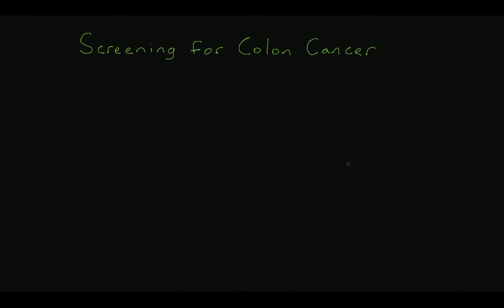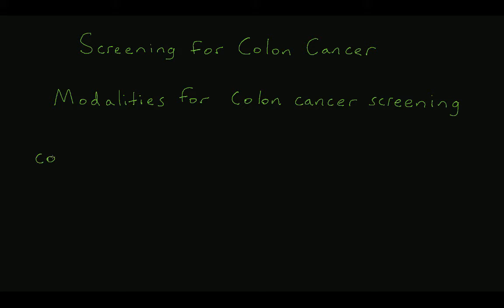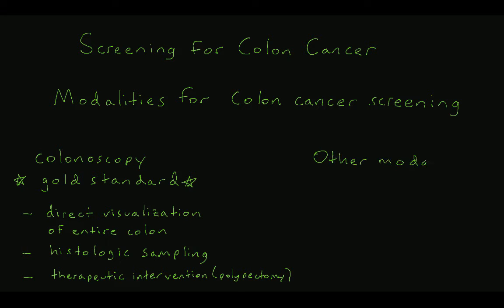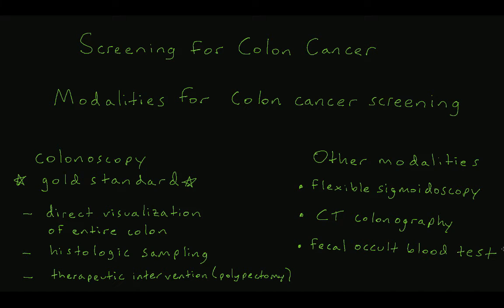There are several different modalities available to screen for colon cancer. Colon cancer originates in the cells of the mucosa, so detection of the disease requires some way of evaluating the mucosa. Colonoscopy is considered the gold standard for colon cancer screening. This modality allows for direct visualization and histologic sampling of suspicious lesions along the entire length of the colon up to the cecum. Colonoscopy is also a therapeutic modality where polyps can be removed, a potentially curative intervention. Other modalities include flexible sigmoidoscopy, CT colonography, and fecal occult blood test, but neither of these options offer all the advantages of colonoscopy.